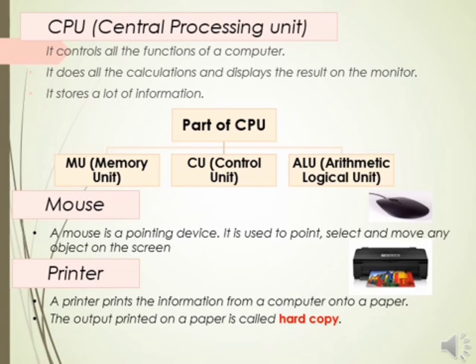Printer. A printer is an additional device which can be attached to a computer system. A printer prints the information from a computer onto paper. The output printed on paper is called a hard copy. The output can be either in black and white or in color. Therefore, a printer is considered as an output device.